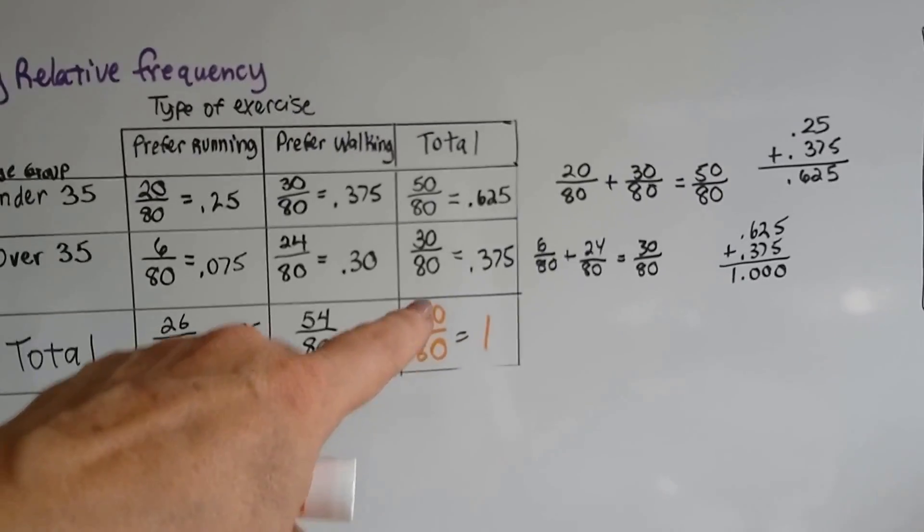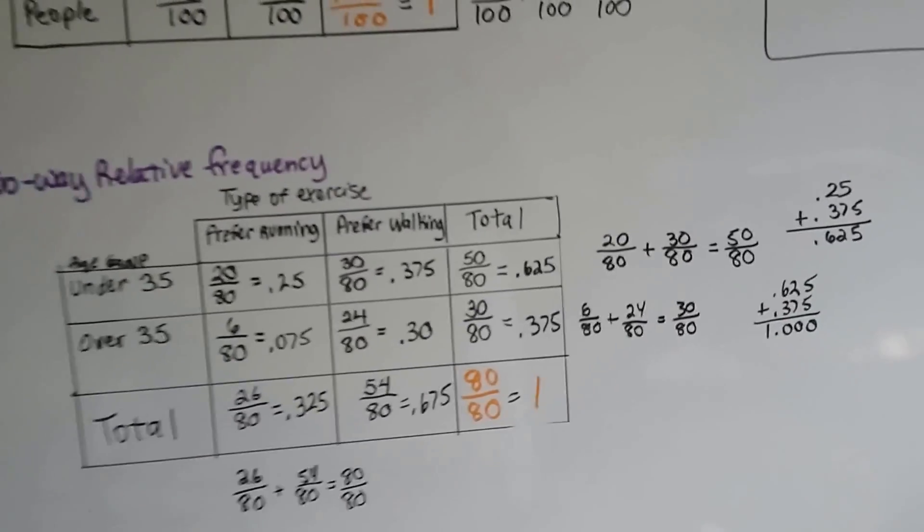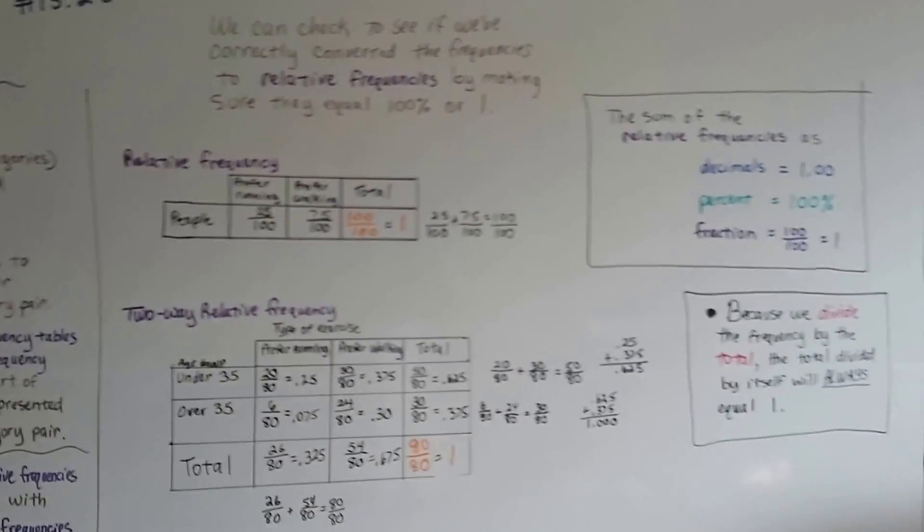If you don't get the same numerator and denominator, then something's wrong. They've got to equal 1. It can't be 99 over 100 or something like that.